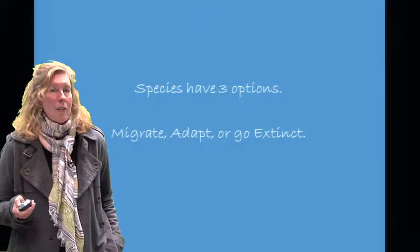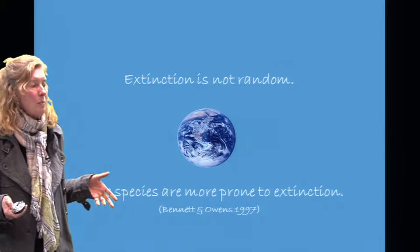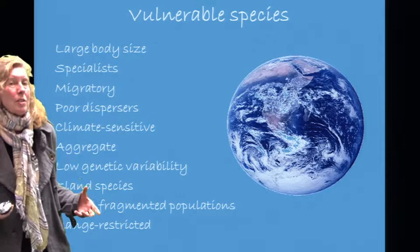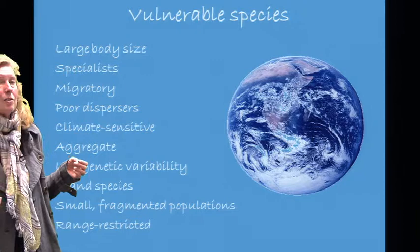Species effectively have three options: they can migrate, they can adapt, or they can go extinct. And extinction is not random — some species are more prone to extinction than others, primarily due to traits. Biologists have compiled a list of traits that make species particularly vulnerable to extinction, such as large body size, being migratory, climate sensitivity, and being an aggregate species.